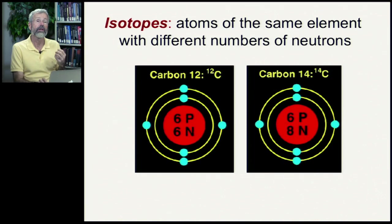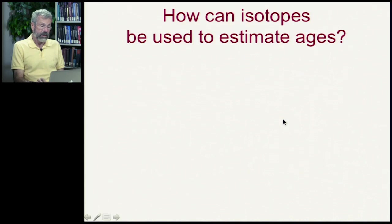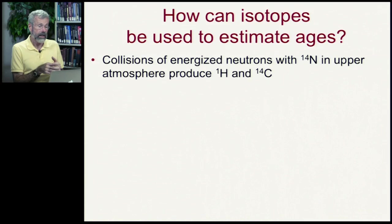Let's first look at the term isotopes — atoms of the same element with different numbers of neutrons. The first example is carbon-12 versus carbon-14. Carbon-12 has six protons and six neutrons. Carbon-14 also has six protons but has an extra two neutrons. Carbon-14 results from the collisions of energized neutrons with nitrogen-14 in the upper atmosphere, which produces a hydrogen atom and carbon-14. So carbon-14 is being generated in the higher atmosphere above Earth.